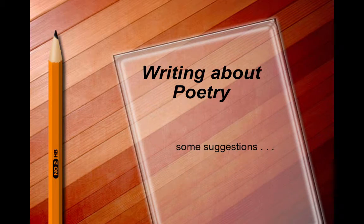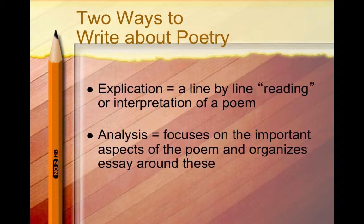Hello, this is Professor Keener with some suggestions for writing about poetry. The two traditional ways for writing about poetry are an explication and an analysis. An explication is a line-by-line interpretation of a poem. An analysis also interprets a poem,